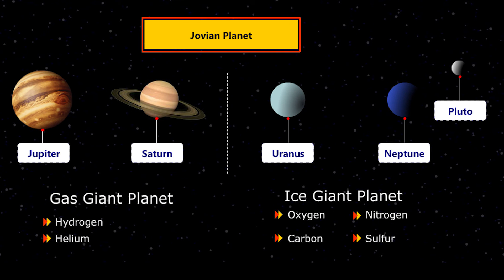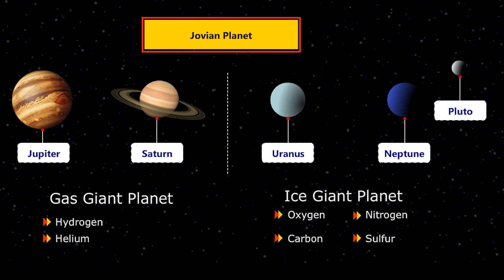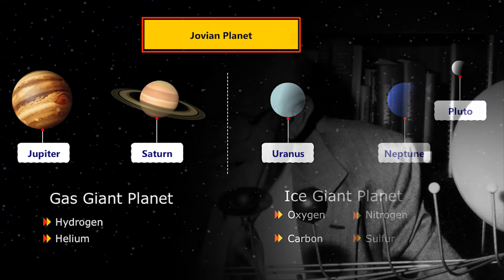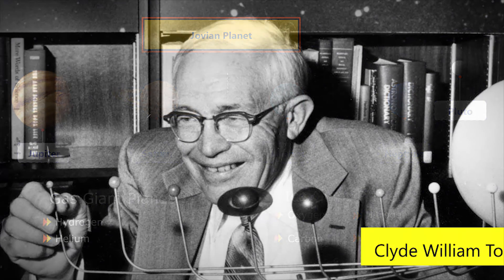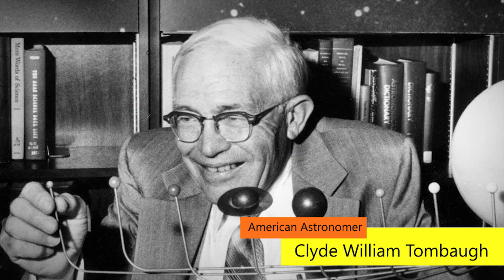Pluto, a dwarf planet, was classified as one of the solar system planets when it was first discovered by Clyde Tombaugh. Clyde William Tombaugh was an American astronomer. He discovered Pluto in 1930.